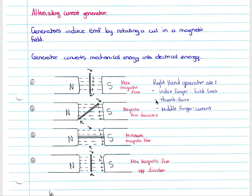To apply the right-hand generator rule, point your index finger in the direction of the field lines between the magnets, and your thumb represents the force on the coil. For the left-hand side of the coil, point your index finger right and thumb up — your middle finger points away from us, indicating current flows away from us. For the right side, with thumb down, the middle finger points towards us, indicating current flows towards us.